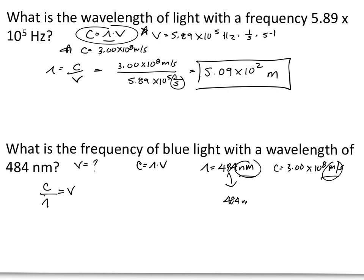So 484 nanometers. Our conversion factor is that there are 10⁻⁹ meters for every 1 nanometer. If you multiply that out, you'll get 4.84 × 10⁻⁷ meters.